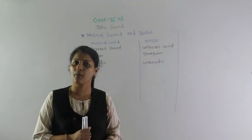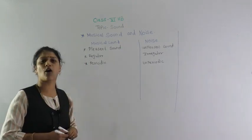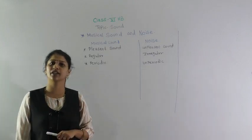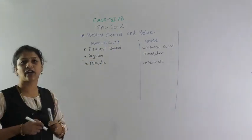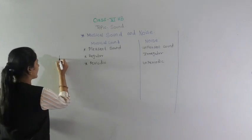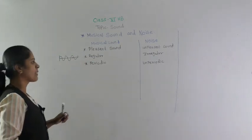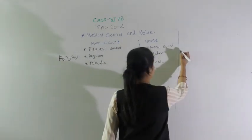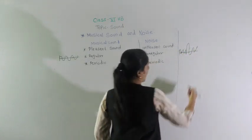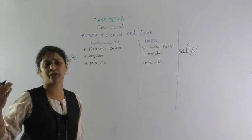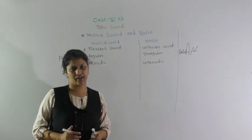Sound is a form of energy and we consider it in the form of waves. For musical sound, the waves are in a regular form — we are able to hear it very smoothly. But for noise, the sound is irregular — it comes with a very large amplitude, which we are unable to hear comfortably. It is an irregular waveform.